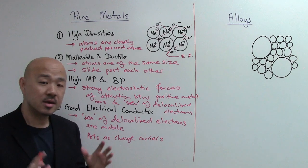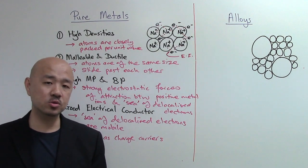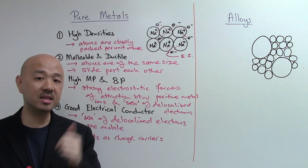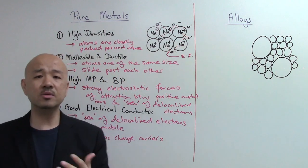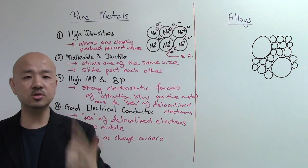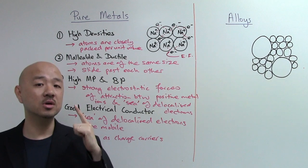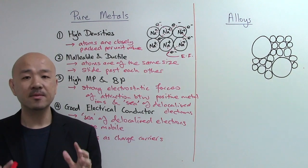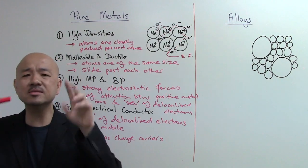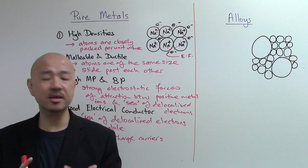Although metals have useful properties, pure metals are not commonly used in everyday life because of two problems. First, most pure metals are too soft since they are malleable and ductile. Second, they tend to react with air and water — meaning they tend to corrode. Therefore, pure metals are not commonly used.